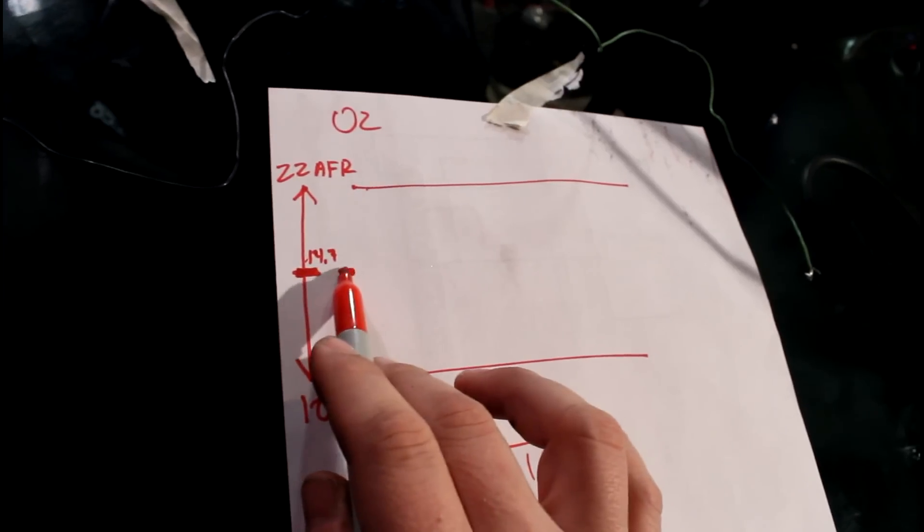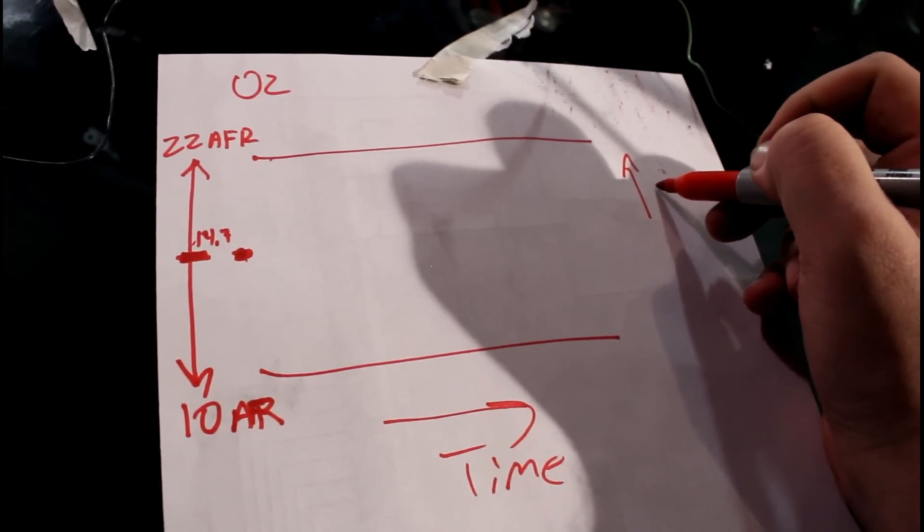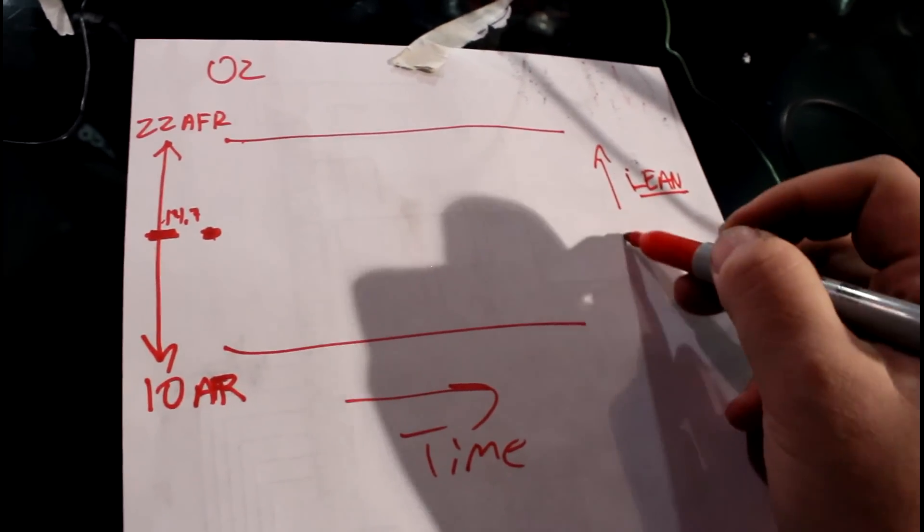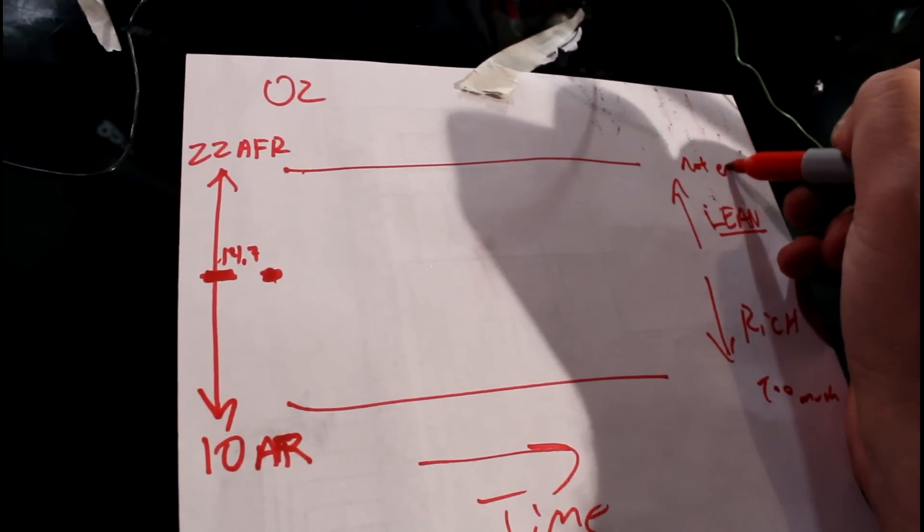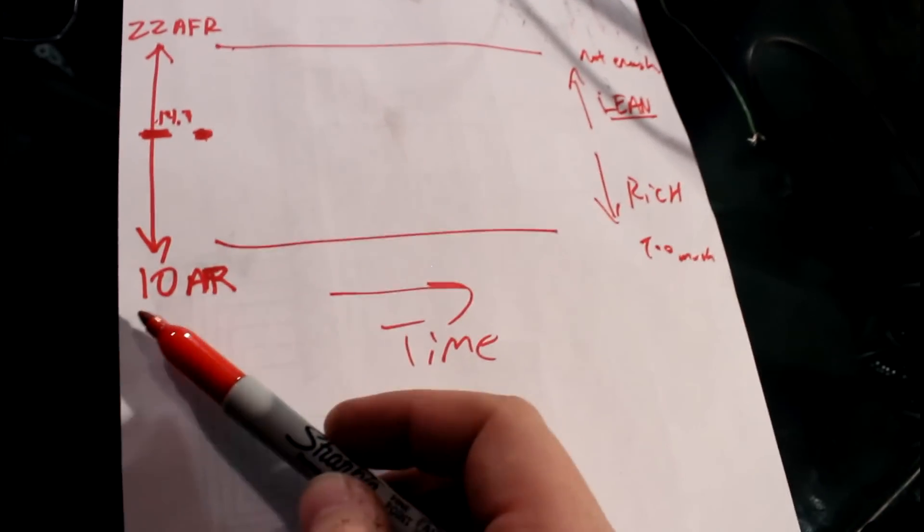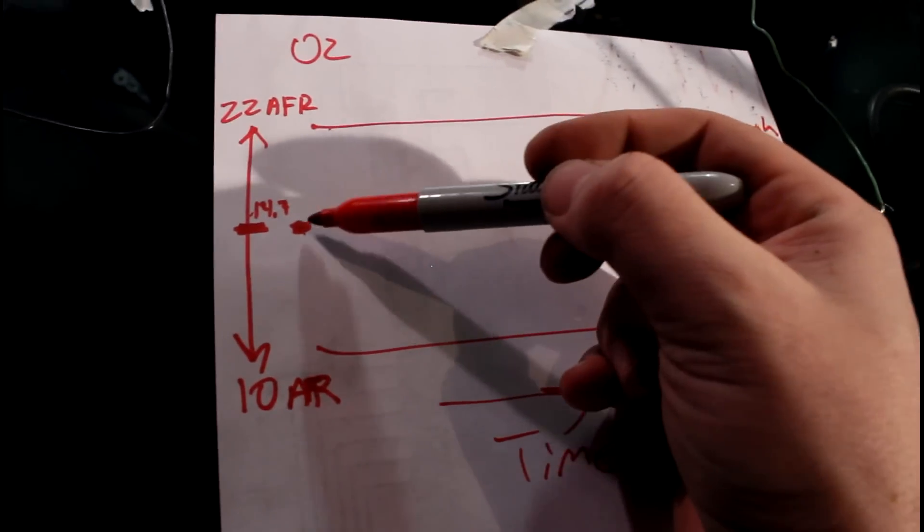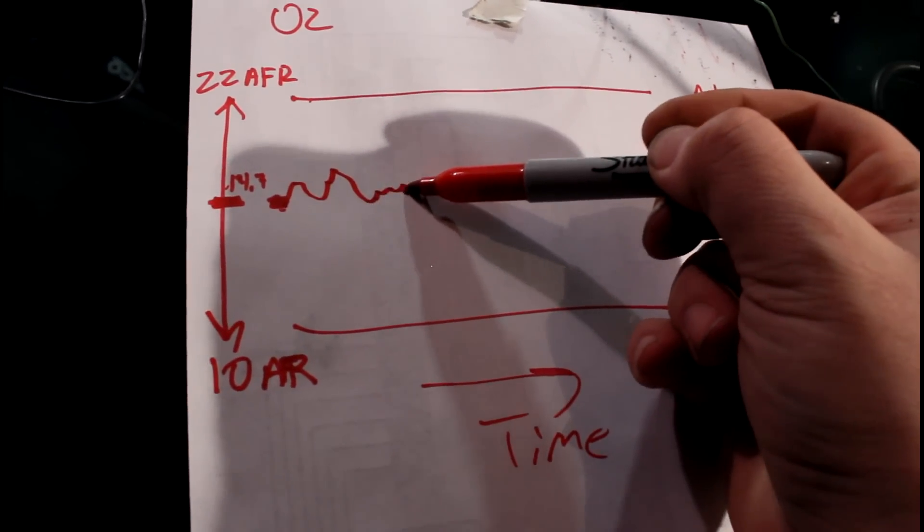So that's going to make a perfect burn. Not be lean or rich. So essentially this side up in 22 is going to be lean, meaning you don't have enough fuel. This side is rich, meaning you have too much fuel. 10 AFR is very rich. 22 AFR is very lean. 14.7 is about right.